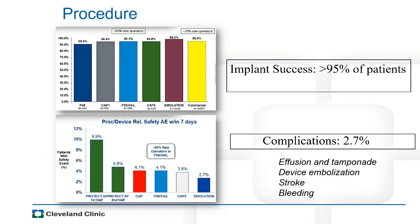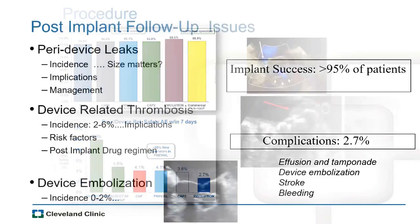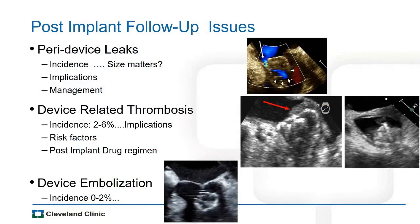There are issues to be aware of on longer-term follow-up. A leak less than 5 mm at 45-day TEE is generally not a big problem. If more than 5 mm, patients may need to continue oral anticoagulation, and some centers attempt coiling to close the leak. Device-related thrombosis, occurring in 1–6% in major clinical trials, is important because it commits patients to longer-term anticoagulation, defeating the rationale of the device.